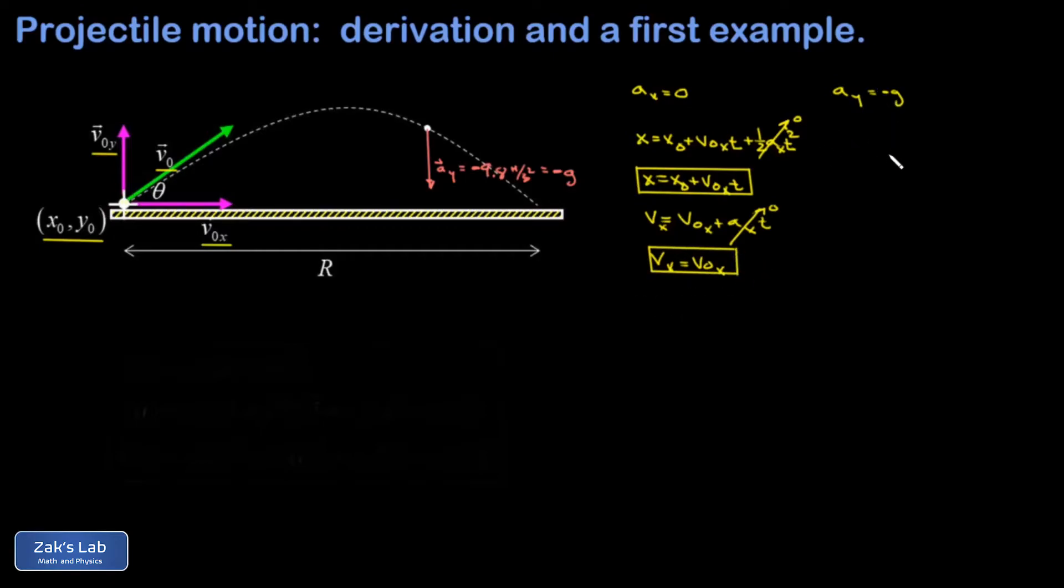And then we take a similar approach to the y coordinate. I take my first standard kinematics equation and I plug in that a_y is equal to negative g. So I'm going to sub in a_y equals negative g. And this gives me my first equation for projectile motion for the vertical coordinate. I'm going to pull the minus sign out in front of that term, and I get a minus one half g t squared on the quadratic term.